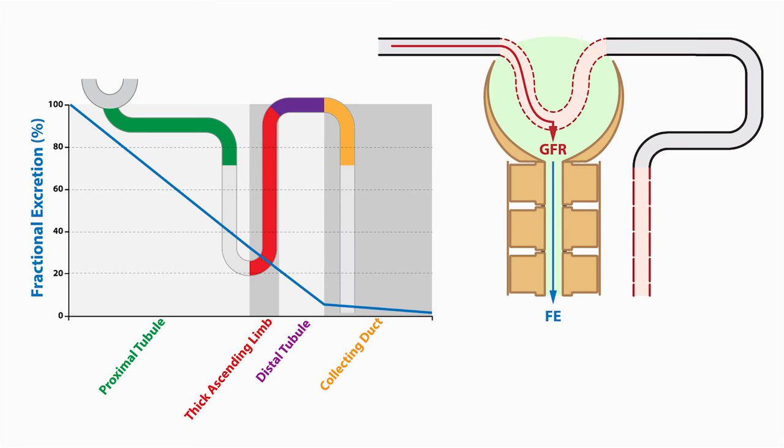With this understanding, we can use the fractional sodium excretion to evaluate renal function. For example, patients taking diuretics, which inhibit the reabsorption of sodium along specific nephron segments, will have an increased fractional sodium excretion.